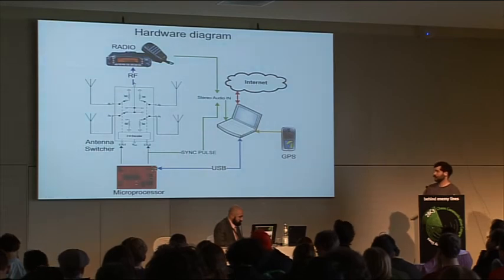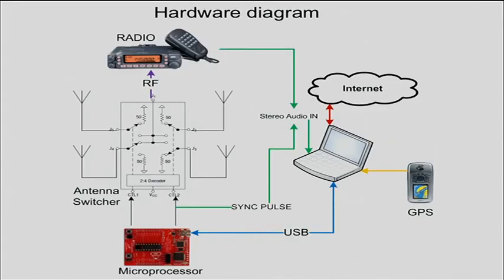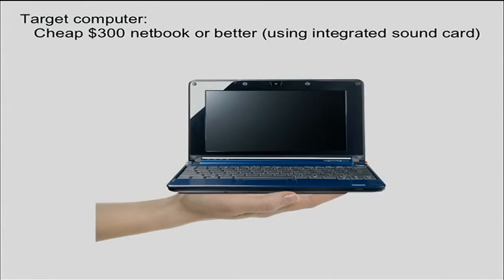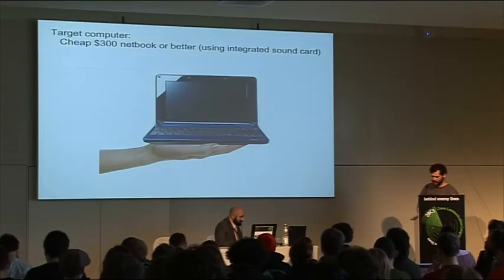This is a block diagram of what I've been working on, using a microprocessor and a cellular telephone antenna switcher. They're pretty simple — you only have two bits to control which antenna you're on, and you switch between those quickly to get a pseudo-antenna rotation. The target computer cost is about $300, so we want this to be easily accessible. You do need a radio, however, at this time.